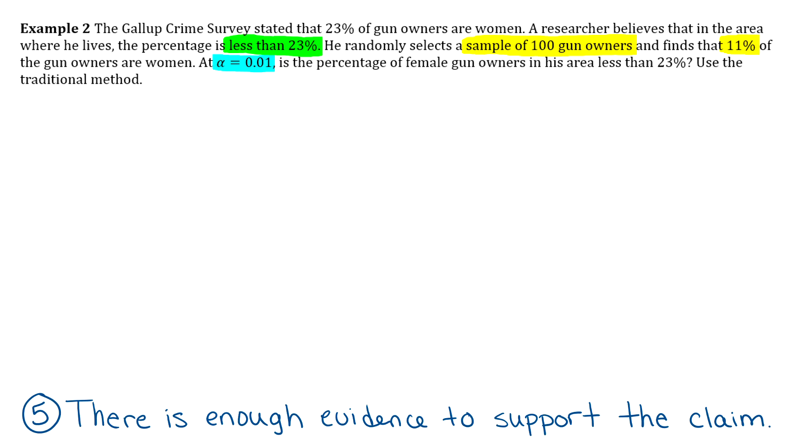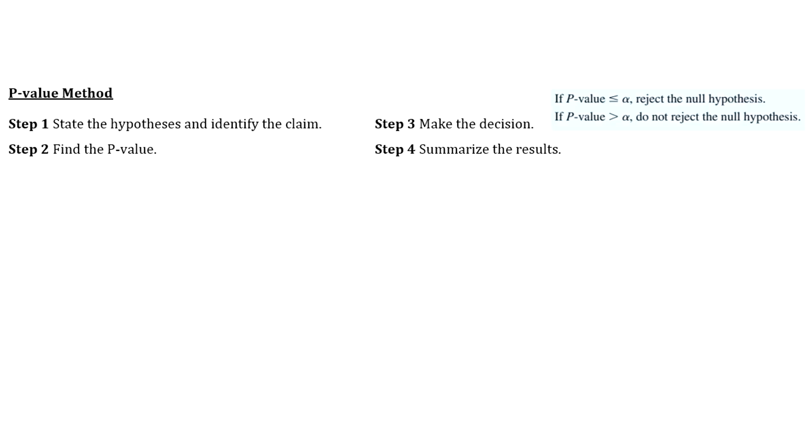Okay, so that was the traditional method for proportions. We can also do the p-value method for proportions as well. So it's the same steps that we did in the other two sections. To get your p-value though in your calculator, you're going to go to one prop z test. So you'll go to stat, go over to tests, and then just scroll down a little bit and you'll see one prop z test. Other than that, all the steps are the same.